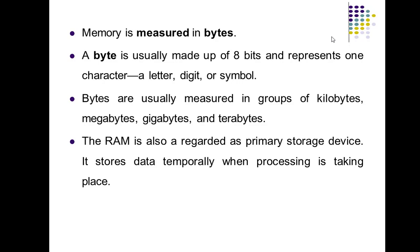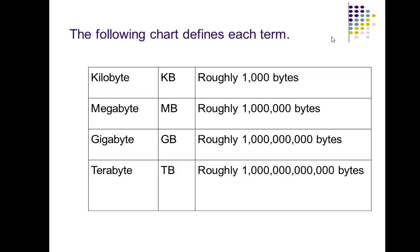RAM is also regarded as the primary storage device; it stores data temporarily when processing is taking place and the data is lost when power is gone. A byte is approximately 8 consecutive bits. A kilobyte is roughly 1,000 bytes, a megabyte is roughly 1 million bytes, a gigabyte is roughly 1 billion bytes, and a terabyte is roughly 1 trillion bytes and over.